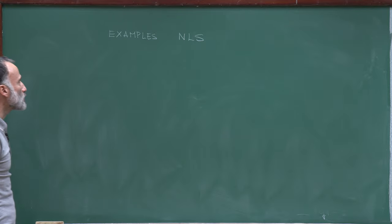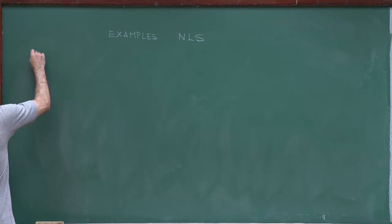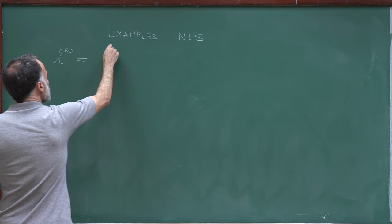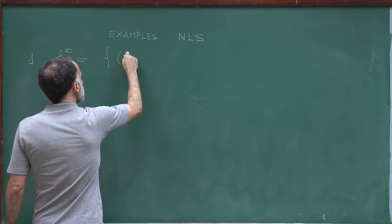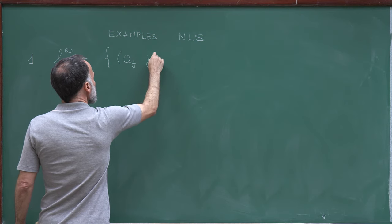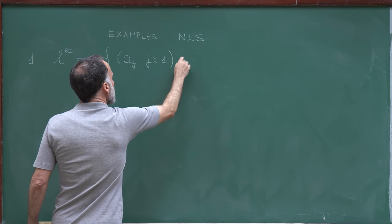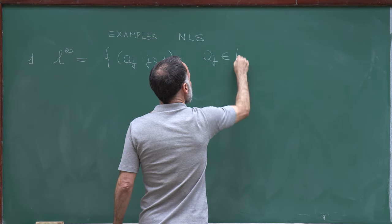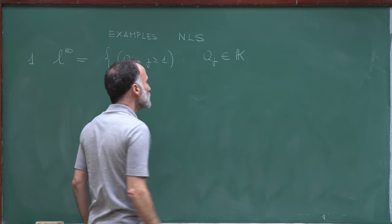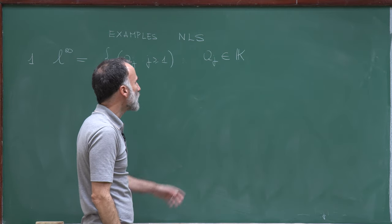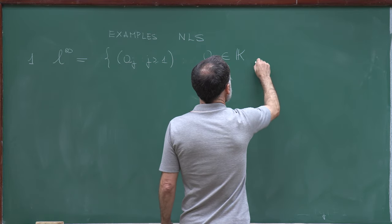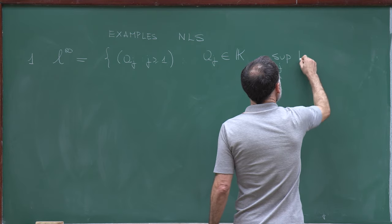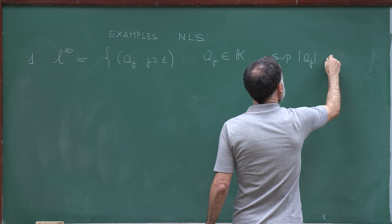I will present four examples in this lecture. The first one is the space L∞. This is the space of all sequences (aⱼ) for j ≥ 1, where aⱼ belongs to our field K — either the real numbers or the complex numbers — and such that the supremum over j of the absolute value of aⱼ is finite.